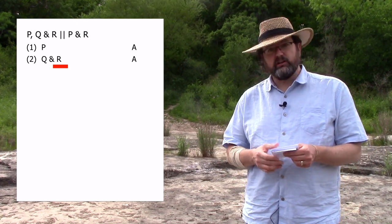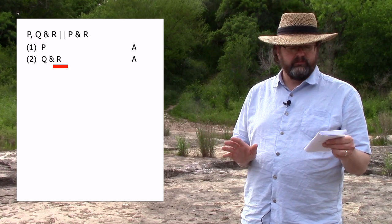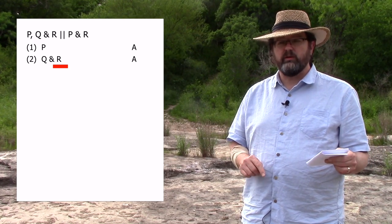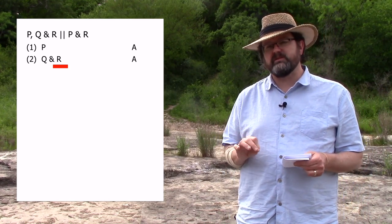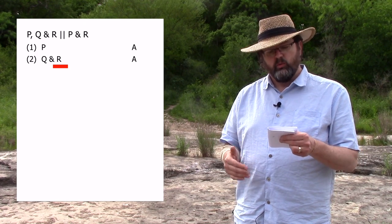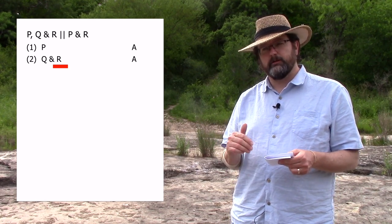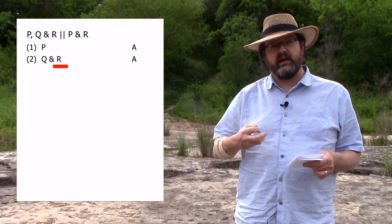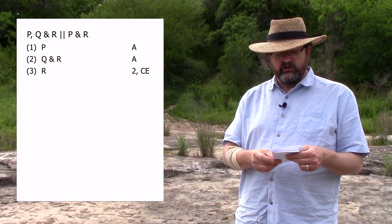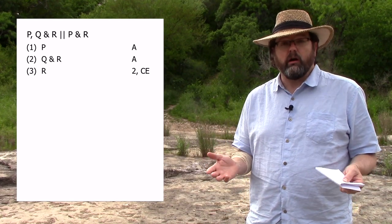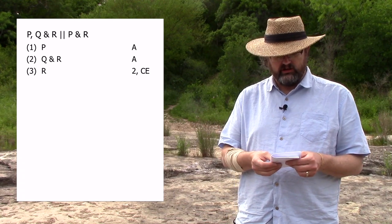We're still probably going to use conjunction introduction at some point, but it's not just a one-stepper. Look at the premises: we have P in line one — that's one half of the conjunction coming from there. We have Q and R in line two. R is one part of that conclusion, but R is part of a conjunction. We need to pull out R from that conjunction, and conjunction elimination allows us to do this. From Q and R, we can infer just R.